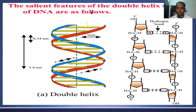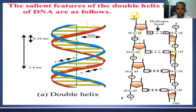One strand runs with polarity 3' to 5', and the other runs opposite — 5' to 3'. This is the antiparallel nature of the two strands. The width of DNA is 2 nanometers. In the nucleotide form shown here, you can see one strand of DNA running in one direction and the other strand running in the opposite direction.